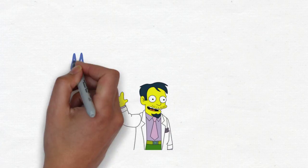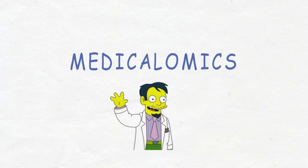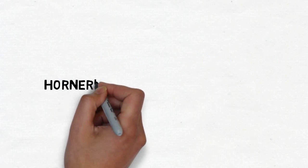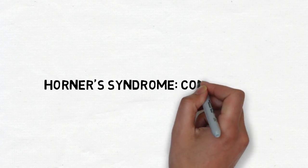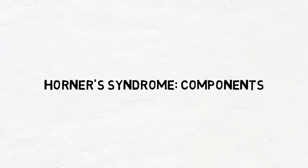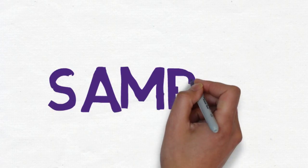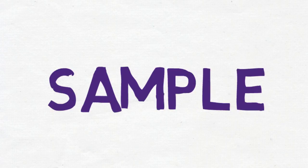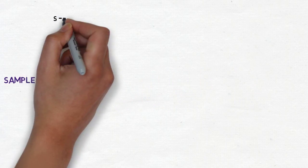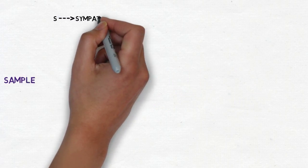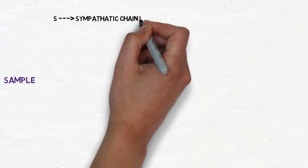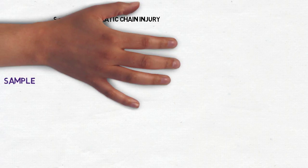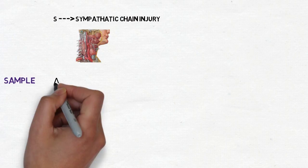Hello guys and welcome to Medicalomics. Today we're going to talk about Horner's syndrome components using a mnemonic. The mnemonic is SAMPLE. S stands for sympathetic chain injury, which refers to the sympathetic chain in the neck.